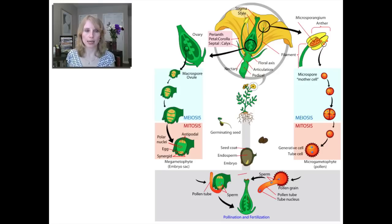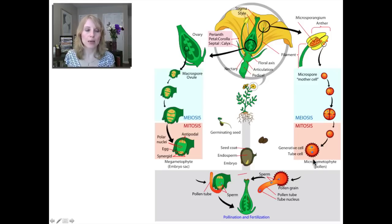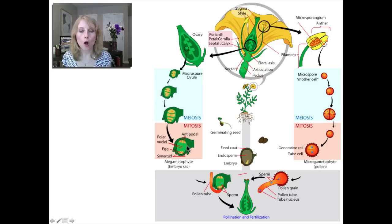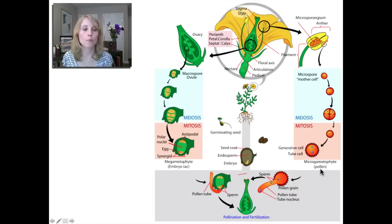Here's a diagram of the angiosperm life cycle. The flower you're looking at is the sporophyte. For the gametophytes: the pollen grain is the male gametophyte, and something called the embryo sac in the ovules is the female gametophyte. Most of the plant is the sporophyte.